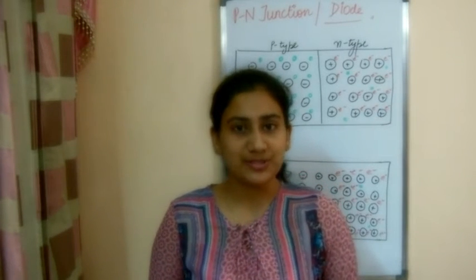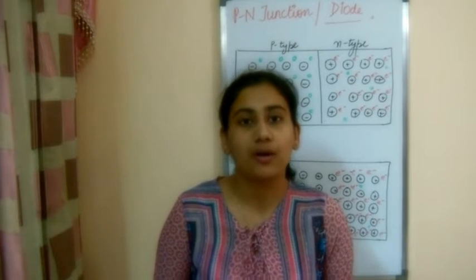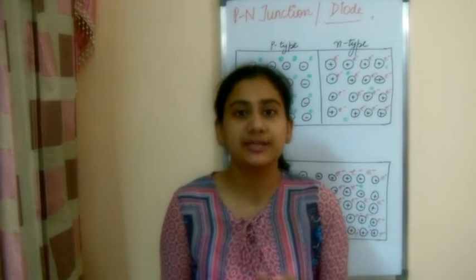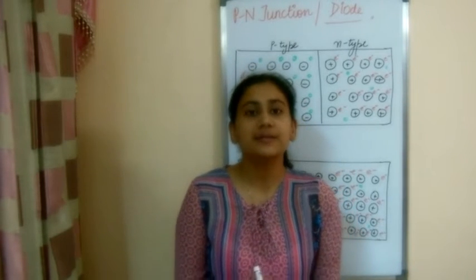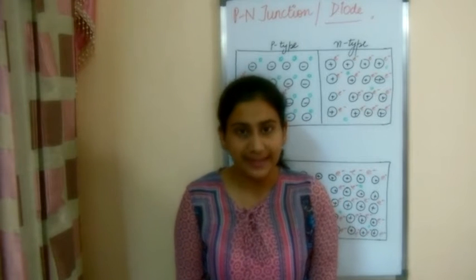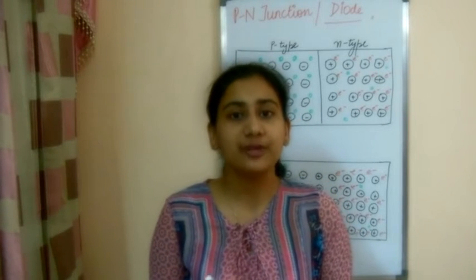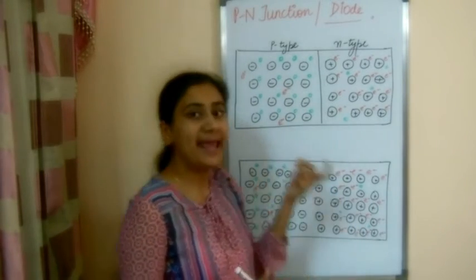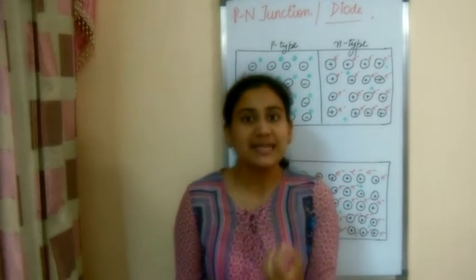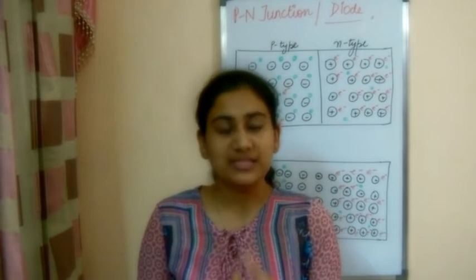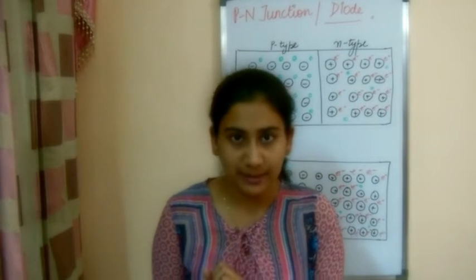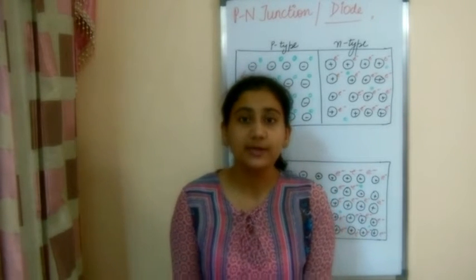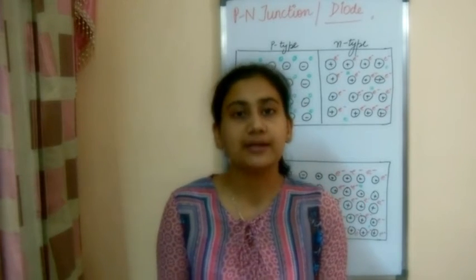In this video we are going to study the PN junction, or semiconductor diode, specifically how the depletion layer is formed. We have studied in the previous video what P-type and N-type semiconductors are. Now we are going to study the PN junction. This name indicates P and N type semiconductors, and junction means they meet — so we study what happens when P-type and N-type semiconductors meet.